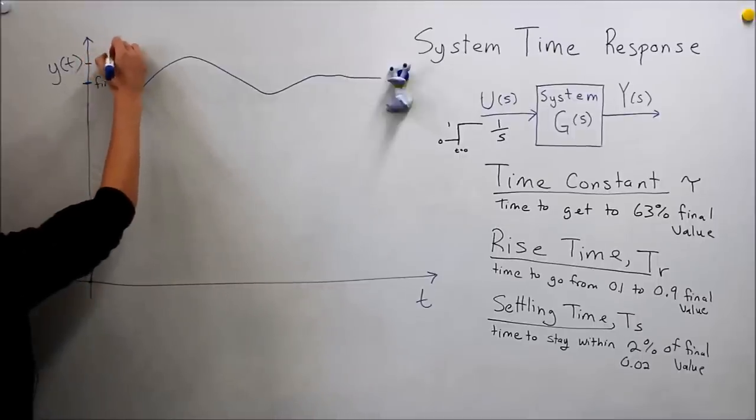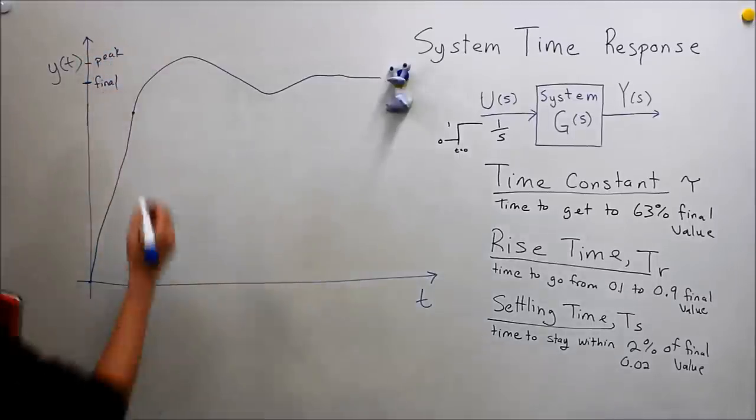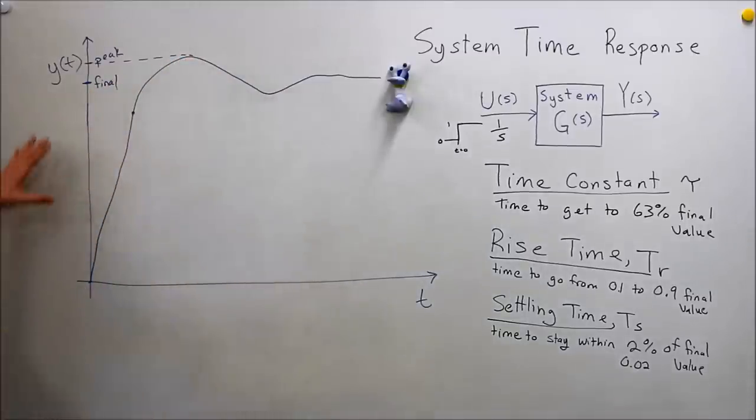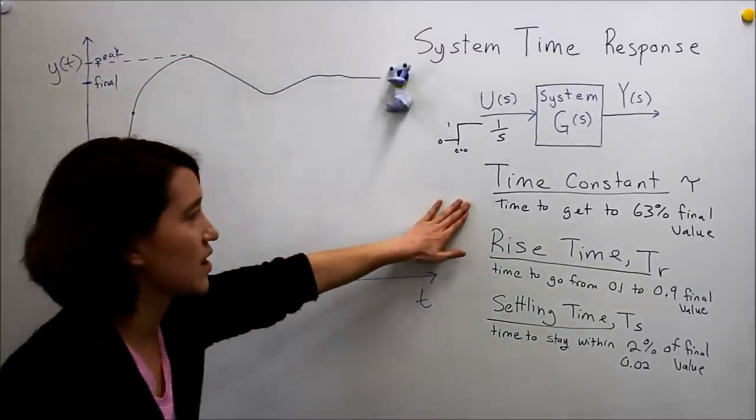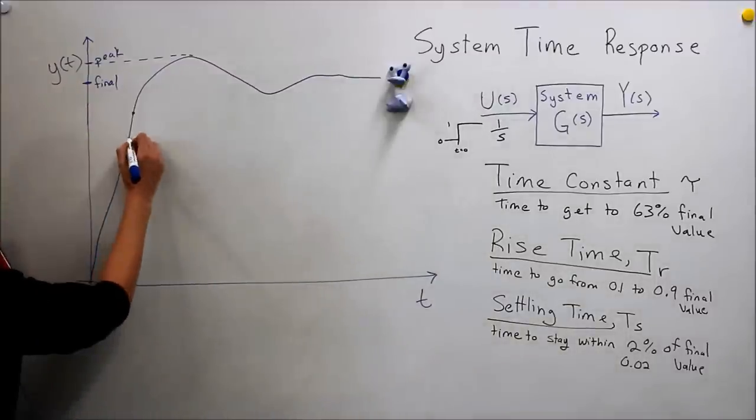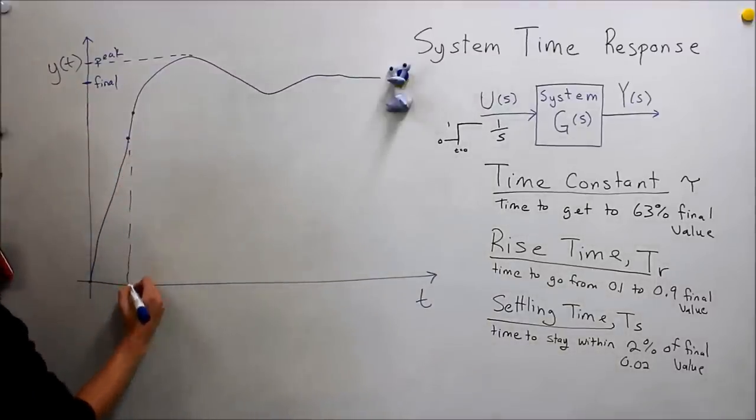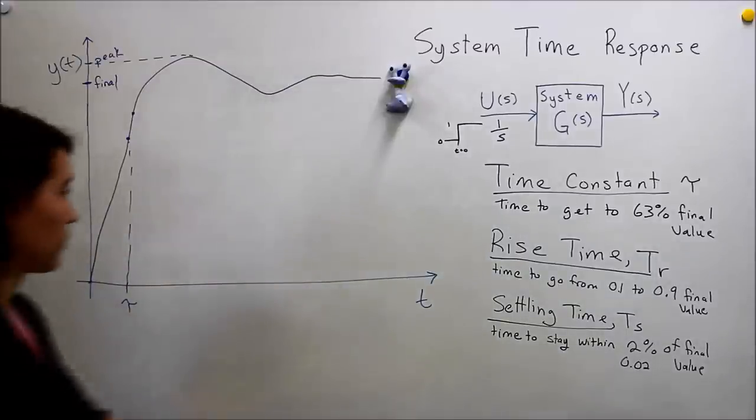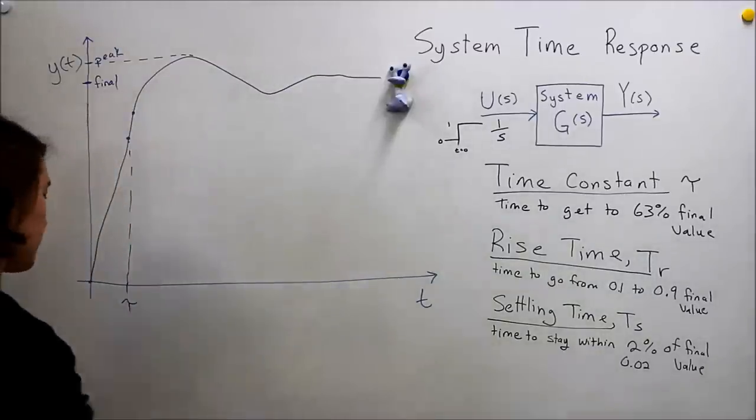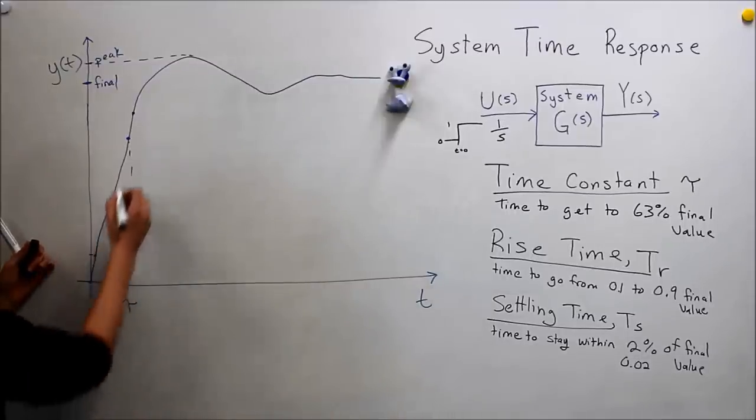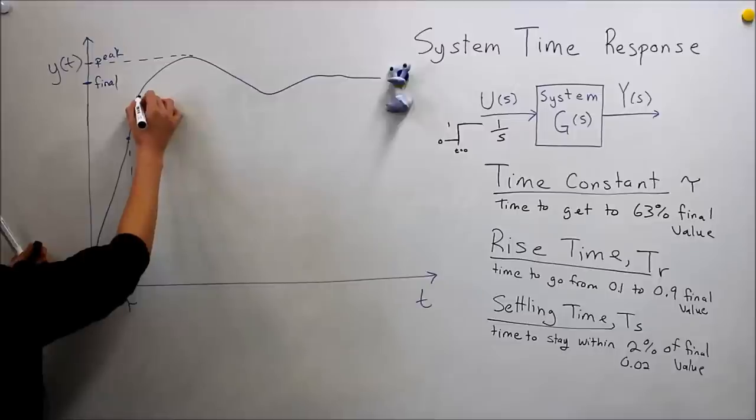And we want 63% of our final value. So let's estimate here. So this would be our tau, our time constant. And then our rise time would be from approximately 10%, so here, to 90% of our final value, so here.